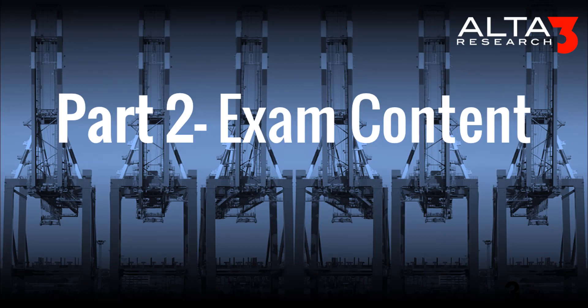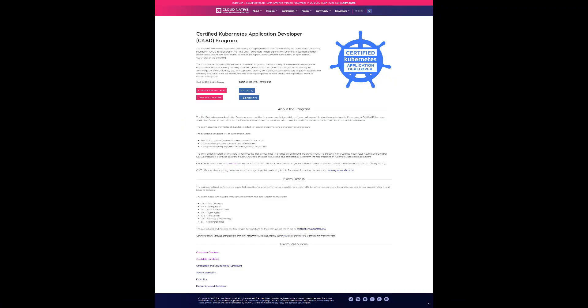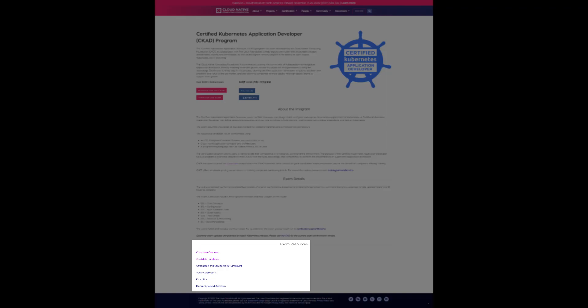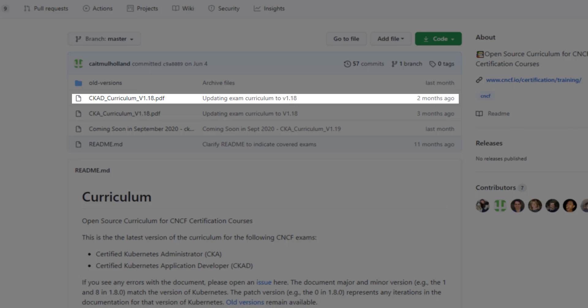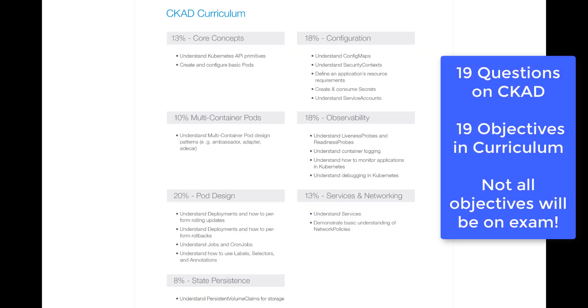Time for Part 2: Exam Content. You can find what objectives are going to be on the test by visiting the bottom of the CKAD website and clicking on Curriculum Overview. Choose the most recent CKAD curriculum in that GitHub repository to see what they are. There are 19 questions on the CKAD exam and 19 objectives in the CKAD curriculum. However, not all of them may be on your randomly generated test.